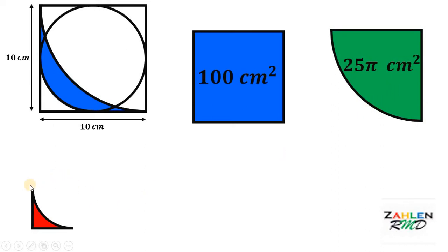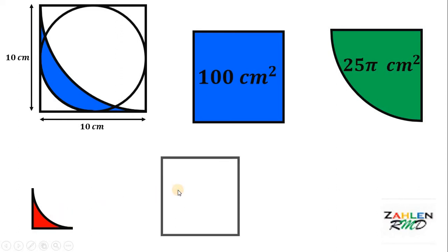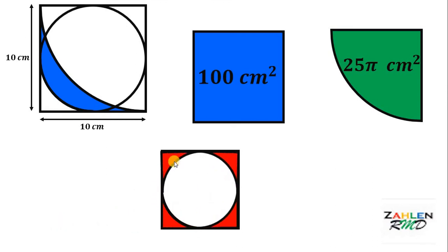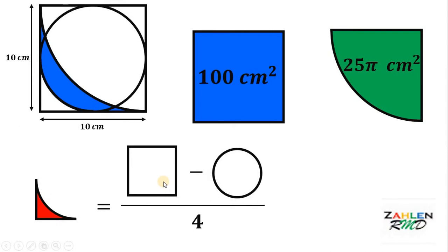Now let's focus on the area of this triangle-like shape. How do we get this shape? To solve for its area, we need a square with a circle drawn inside it. Notice that this triangle-like shape is one of four identical pieces. So to find the area of one piece, we divide by 4. We take the area of the square minus the area of the circle inside it, then divide by 4.